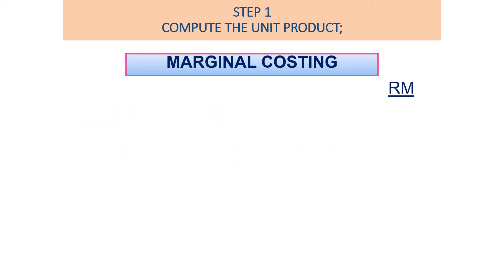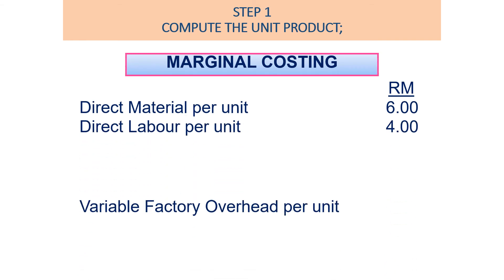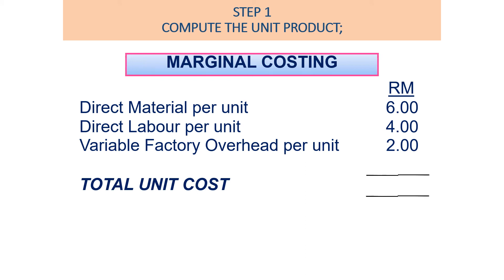Under marginal costing, the unit product cost includes: direct material RM6, direct labor RM4, and variable factory overhead RM2. The total unit product cost under marginal costing is RM12.